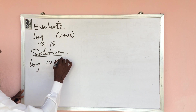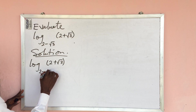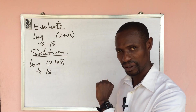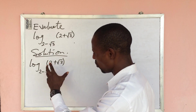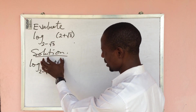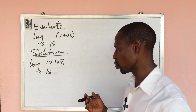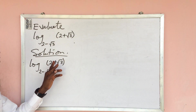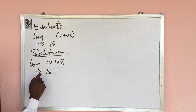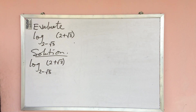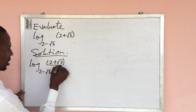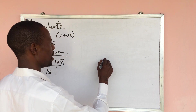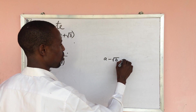We have log(2 + √3) base (2 − √3). How do we evaluate this? We look at the log argument and the base, and we think of manipulating the log by using the conjugate. So we multiply the numerator and denominator of the log by the conjugate of the base — which is this expression over 1.